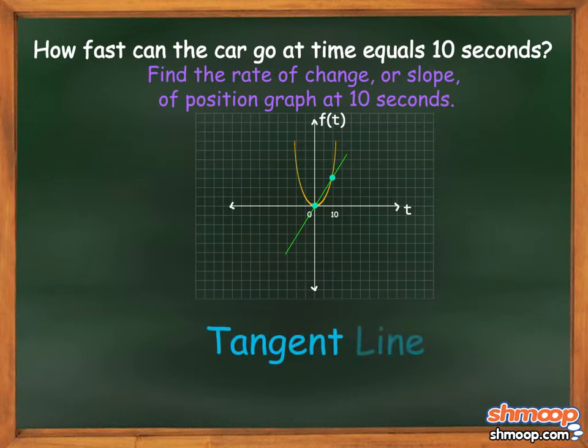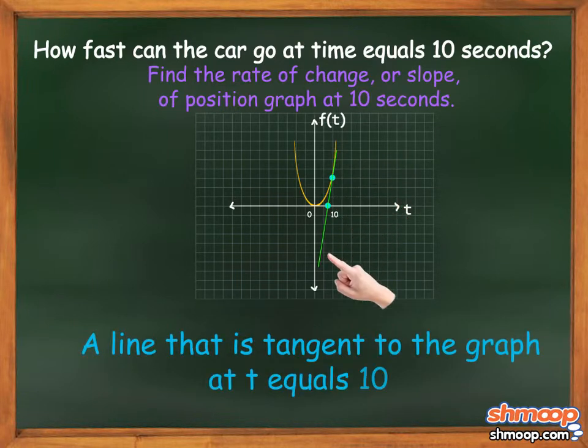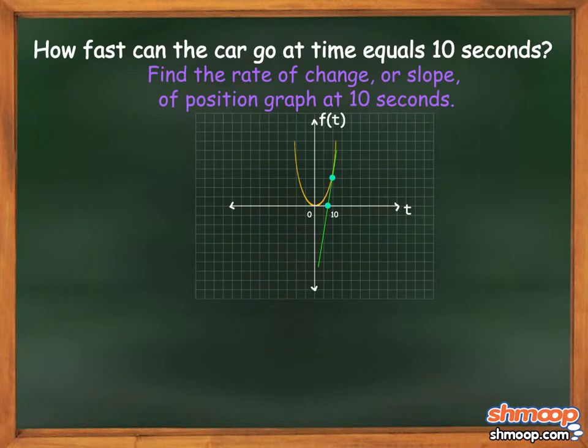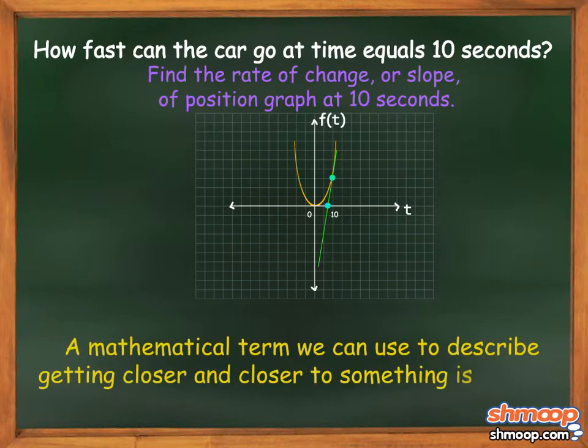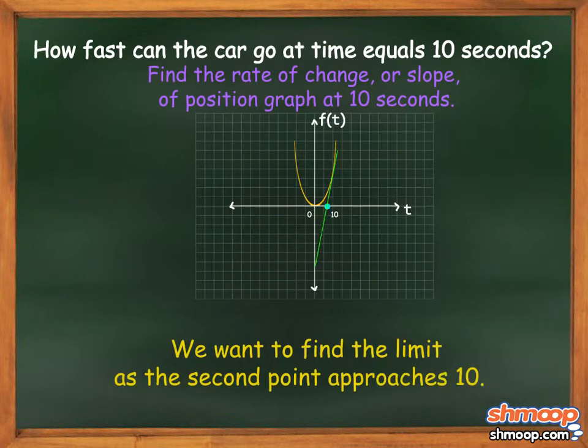To find the tangent line, we can slide the other point closer and closer to t equals 10, and eventually we'll get a line that is tangent to the graph at t equals 10. A mathematical term we can use to describe getting closer and closer to something is a limit. In other words, we want to find the limit as the second point approaches 10.